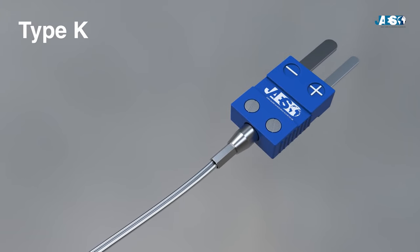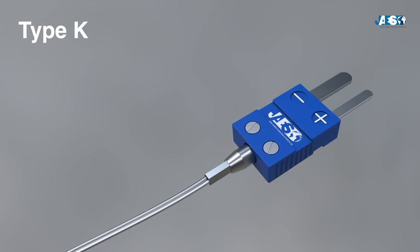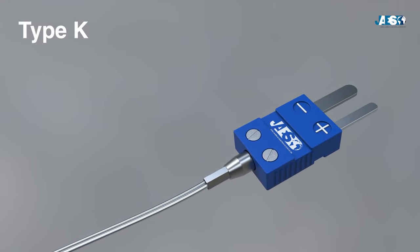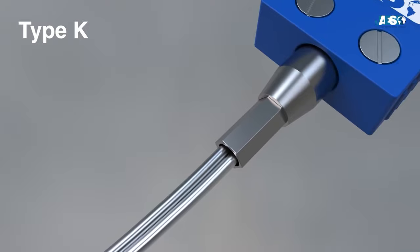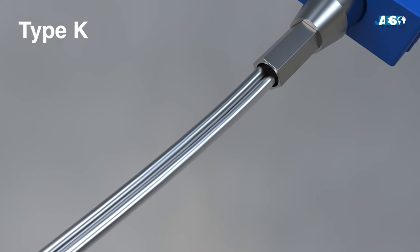The model marked with the letter K is the most common, cheap, and available in many formats. Composed of Chromel and Alumel, it detects a measurement range from negative 200 degrees Celsius to 1,260 degrees Celsius.